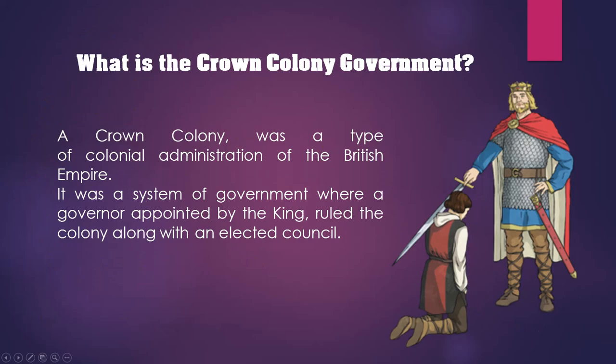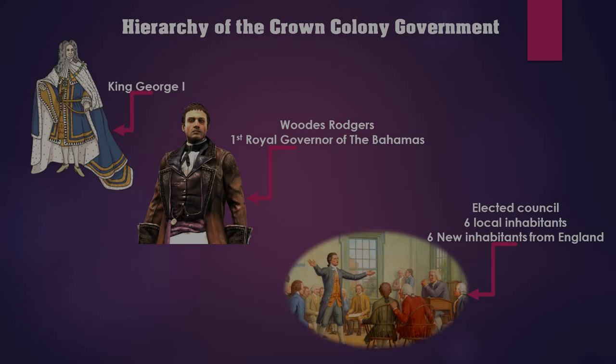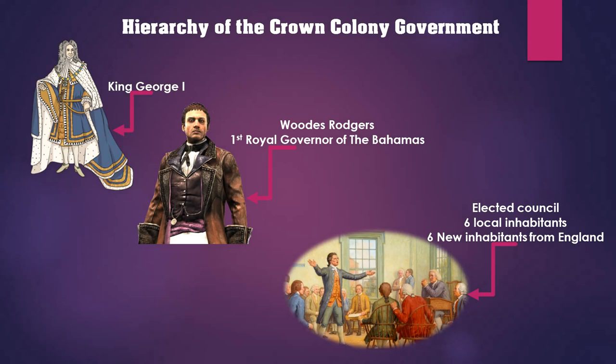What is a Crown Colony Government? A Crown Colony was a type of colonial administration of the British Empire. It was a system of government where a governor appointed by the king ruled the colony along with an elected council. The colonies now came directly under the king, King George I. He appointed a governor who had a council of advisors and could set up an assembly, an elected council.